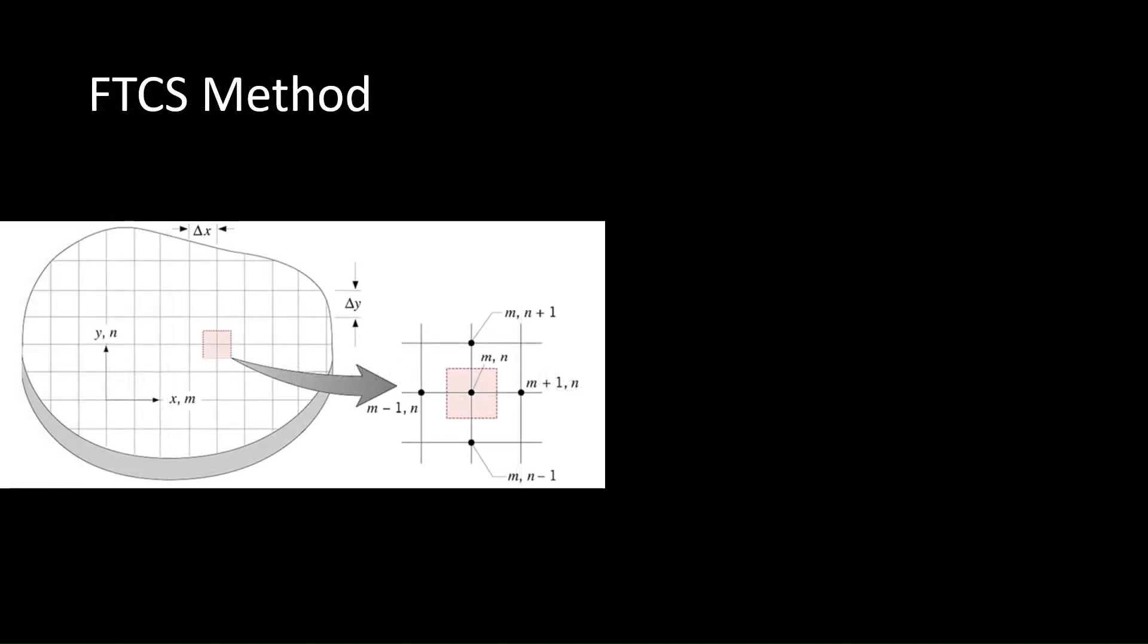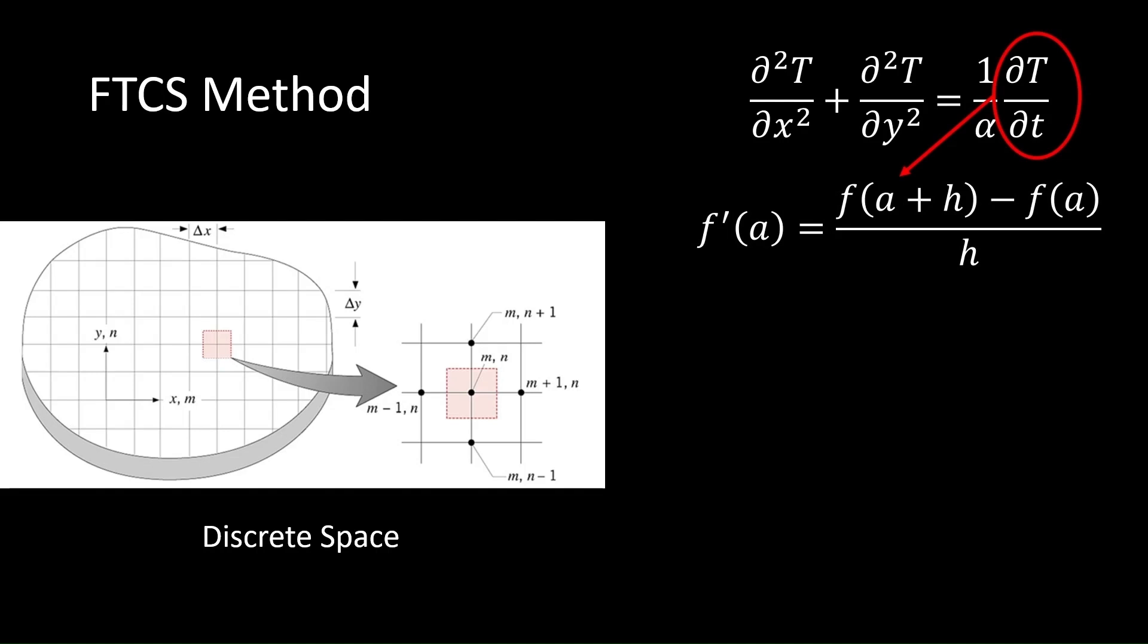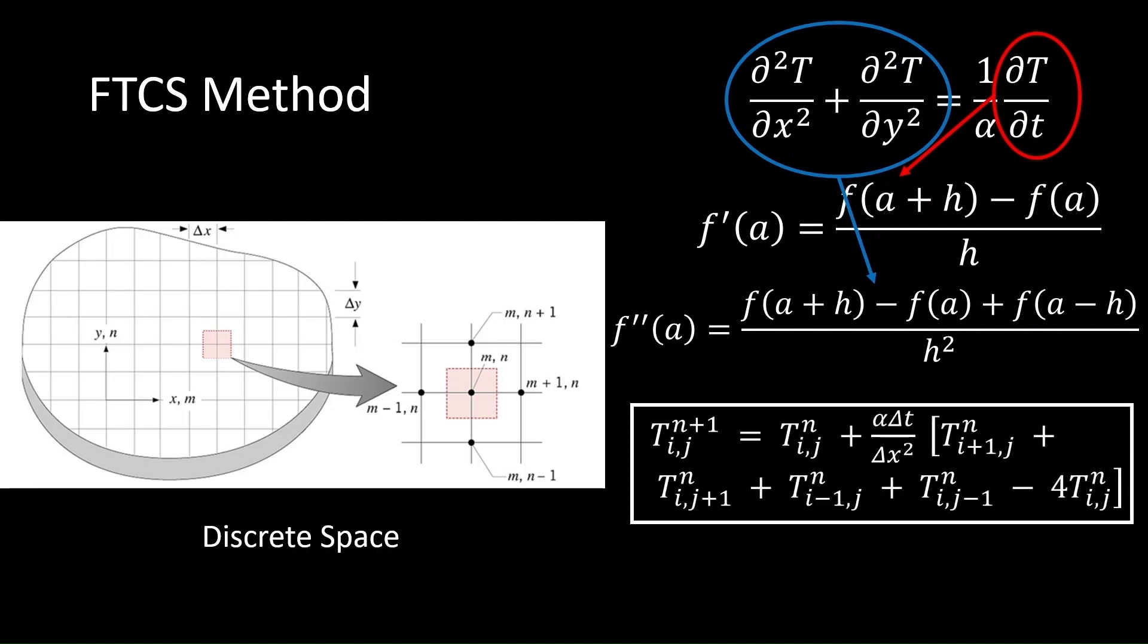This is a 2D problem, which means that a numerical solution requires that the finite slab be split into square chunks of length delta x by delta y. After discretizing the square slab, we start with the 2D form of the heat equation previously derived. We can evaluate the right-hand term, which involves a first derivative, using the forward finite difference equation. We can then evaluate the left-hand term, which involves a second derivative, using the central finite difference equation. After simplification, we get the following expression, known as the forward time-centered space, or FTCS method.